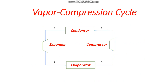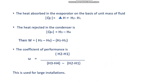This vapor compression cycle involves the evaporator, condenser, compressor, and expander. For this cycle, we can write equations on the basis of unit mass of fluid. The heat absorbed in the evaporator is qc = Δh = h2 − h1.